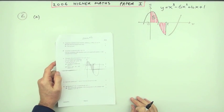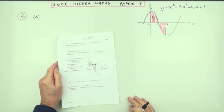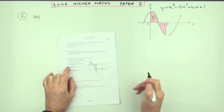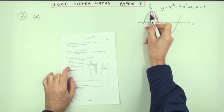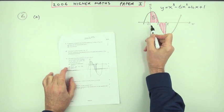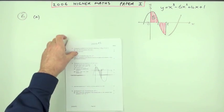Number six from the 2006 Higher Maths Paper one, Area Under a Curve. Part A for four marks, calculate the shaded area S. And then part B for three marks, what's the total area?